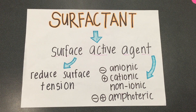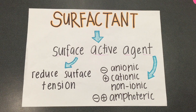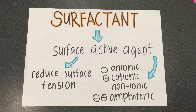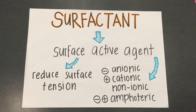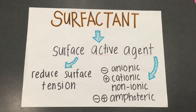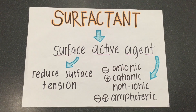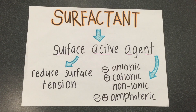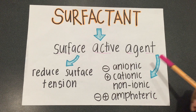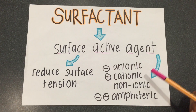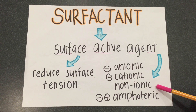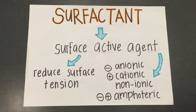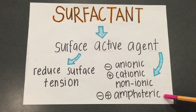Surfactant can be divided into 4 different groups based on the electric charge in the hydrophilic head. The groups are anionic, cationic, non-ionic, and amphoteric.